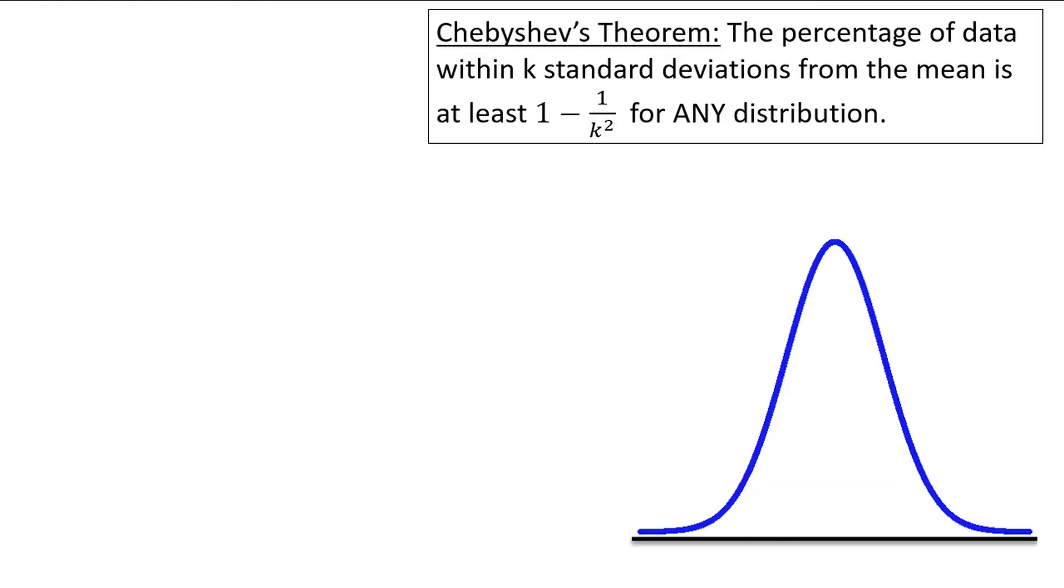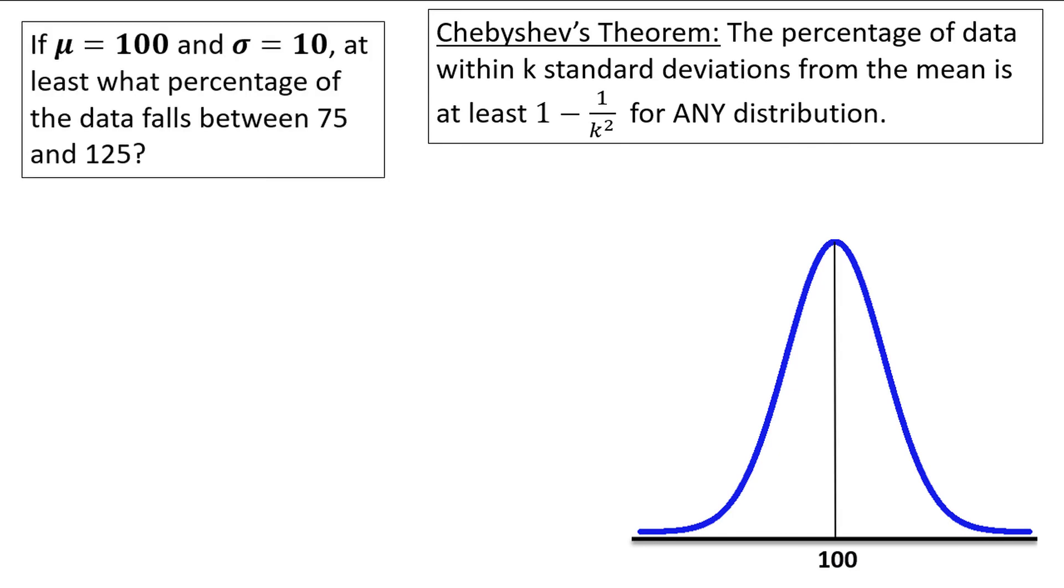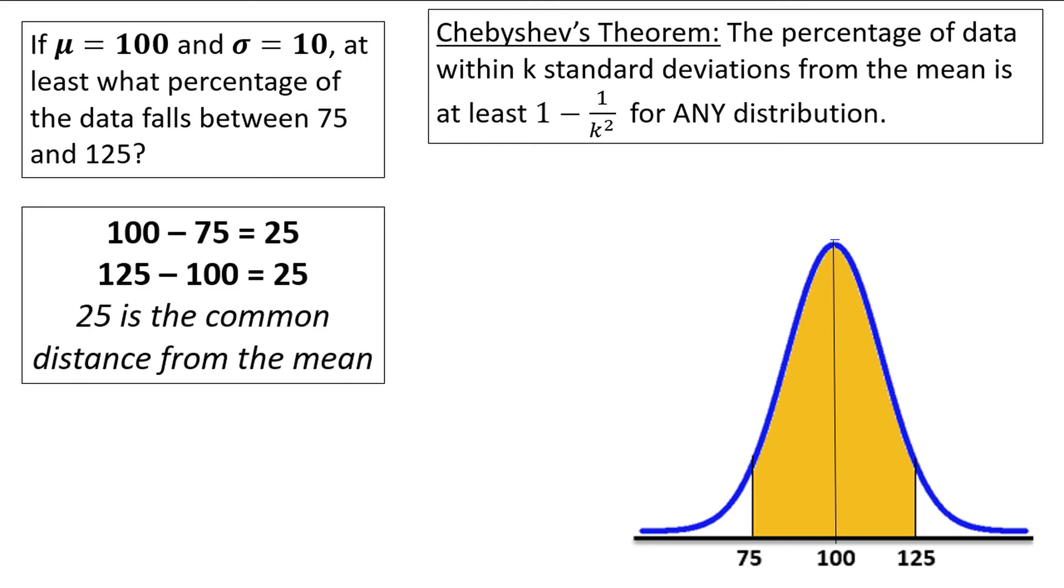Let's look at another example. Working with the same distribution, with a mean of 100 and a standard deviation of 10, at least what percentage of the data falls between 75 and 125? This time we are told the boundary points, 75 and 125, which we can add to our distribution. But in this case we aren't told k, the number of standard deviations from the mean.